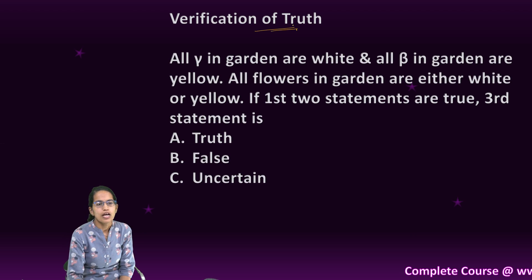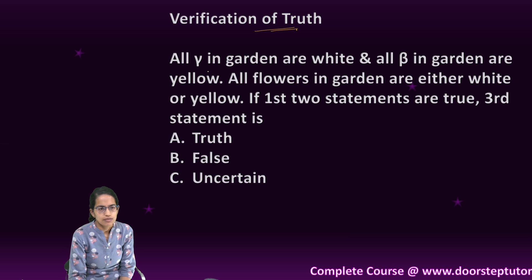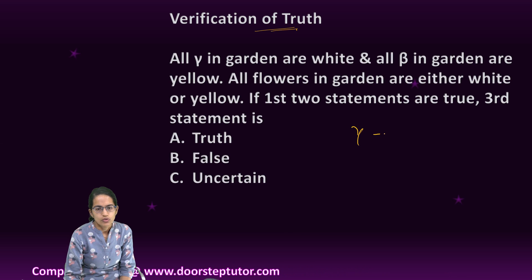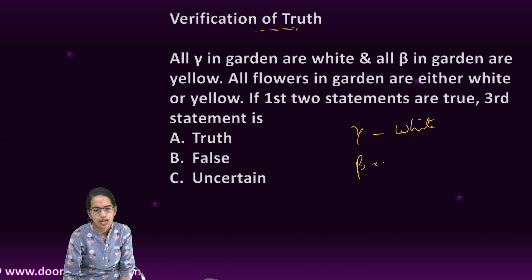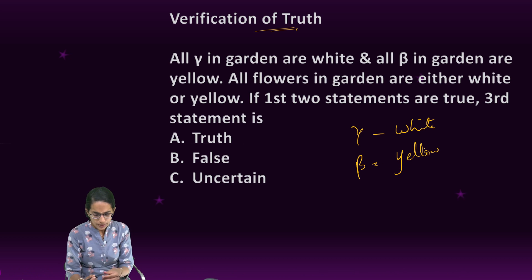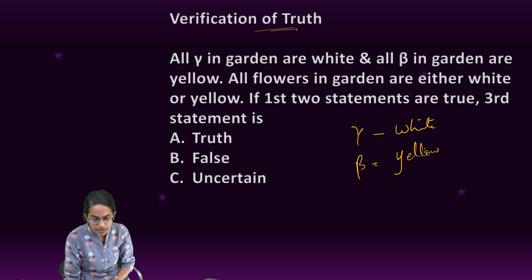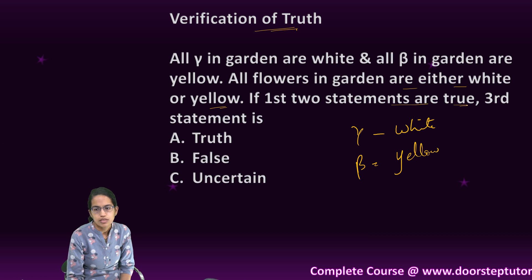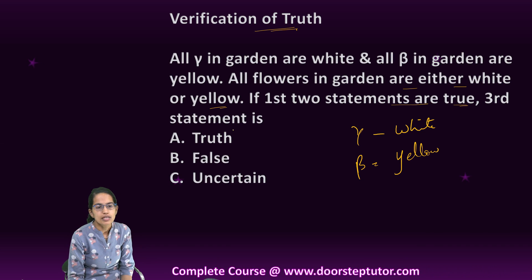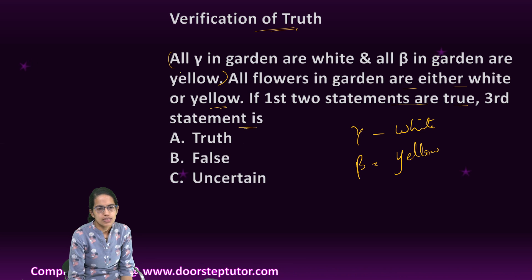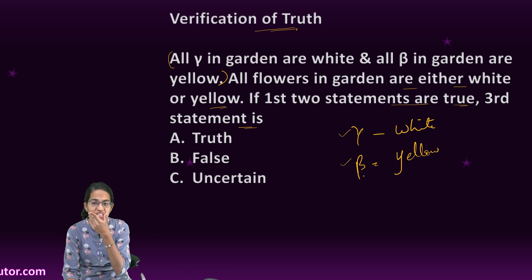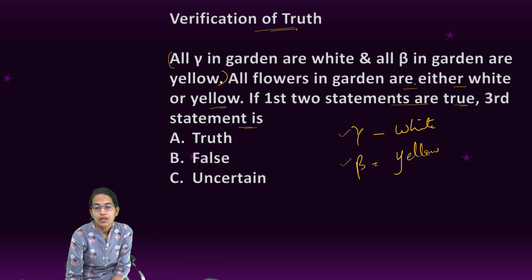Verification of truth. The first statement says all gamma in the garden are white and all beta are yellow. So gamma are white and beta are yellow. Based on this, what is to be written is: all the flowers are either white or yellow. If the first two statements are true, the third statement is — the first two statements say all gamma are white and all beta are yellow, and both of them are correct.